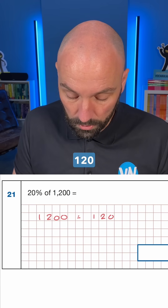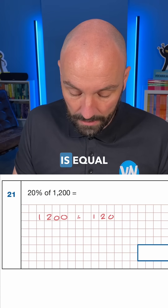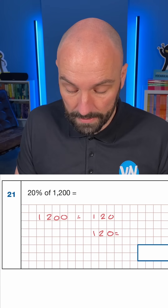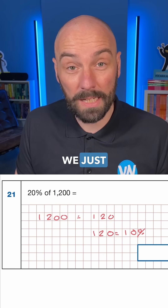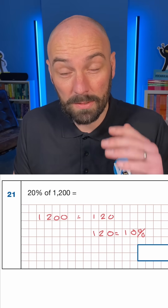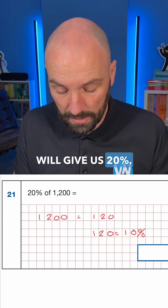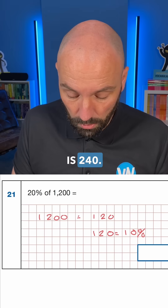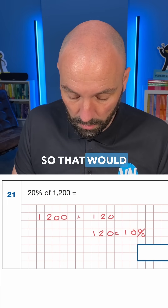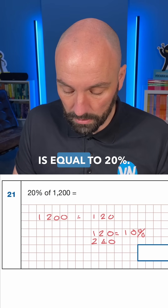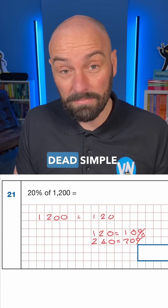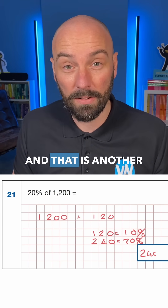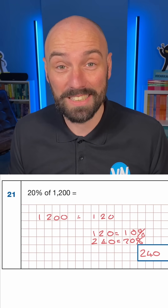So we know that 120 is equal to 10%. In order to find 20%, we just need to times by 2 — double it — which gives us 20%. So 120 times 2 is 240. So 240 is equal to 20%. Dead simple — 240 in our answer area, and that is another SATs question solved.